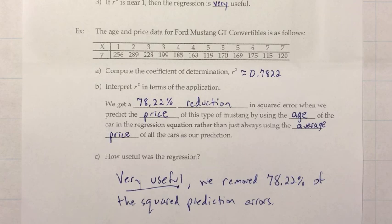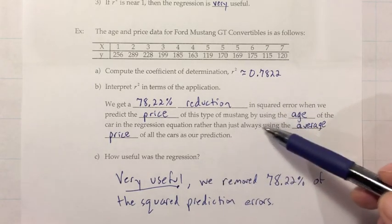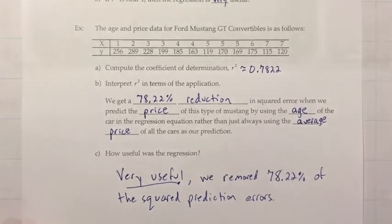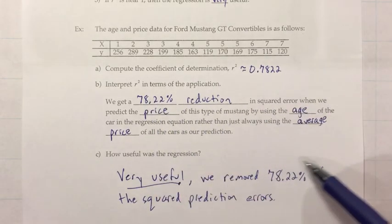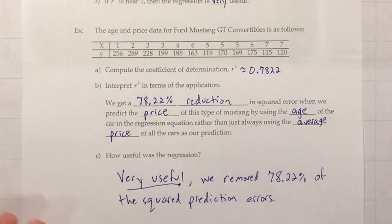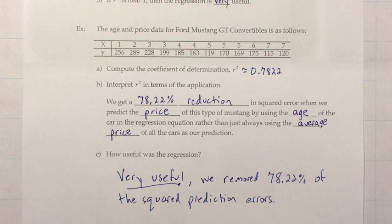The closer you are to 0, the more worried you are that regression isn't useful at all. When asked how useful the regression was, give an answer like that — though it can be a bit briefer. If asked to interpret R-squared specifically, you need the full interpretation with all the pieces. On your first couple of homework problems, keep this example nearby and make tweaks to fit the problem you're doing. Hopefully by the last few problems you can do it without an example to reference. That wraps up this section.